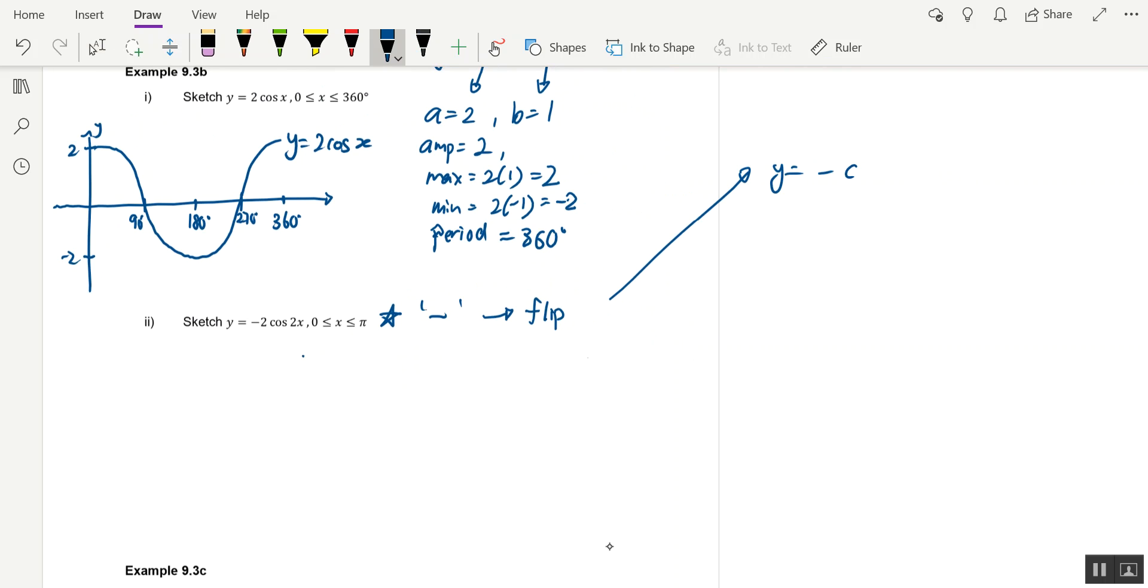Y equals to negative cos x would look like this. The difference from y equals cosine x is we change all the y values from positive to negative. We flip it along the x-axis. The x-axis is like a mirror.